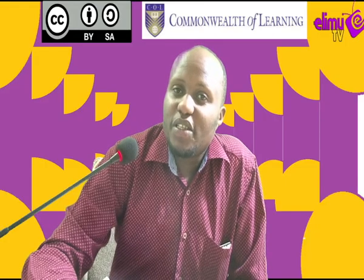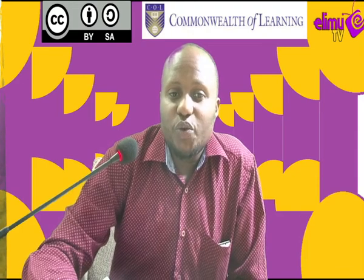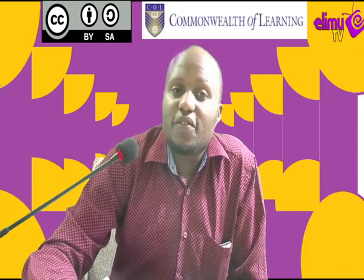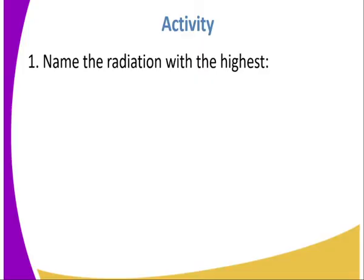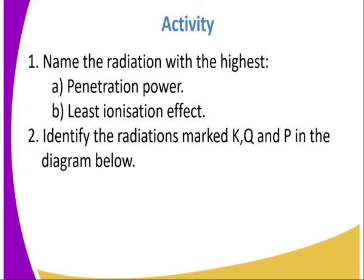So, have we understood the properties of products of radioactivity — that is, alpha, beta, and gamma? Let's check by answering the following questions. Question one: name the radiation with the highest penetration power, and name the radiation with the least ionization effect on matter. Question two: identify the radiations marked K, Q, and P in the diagram below, considering their deflection or any other property we have looked at.